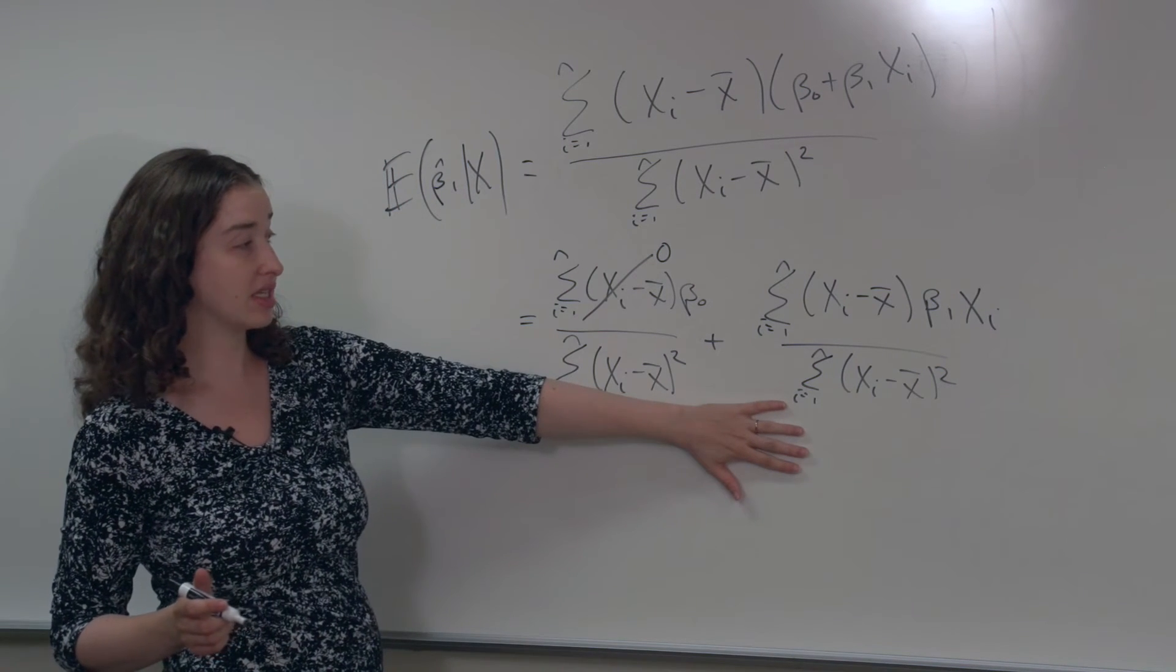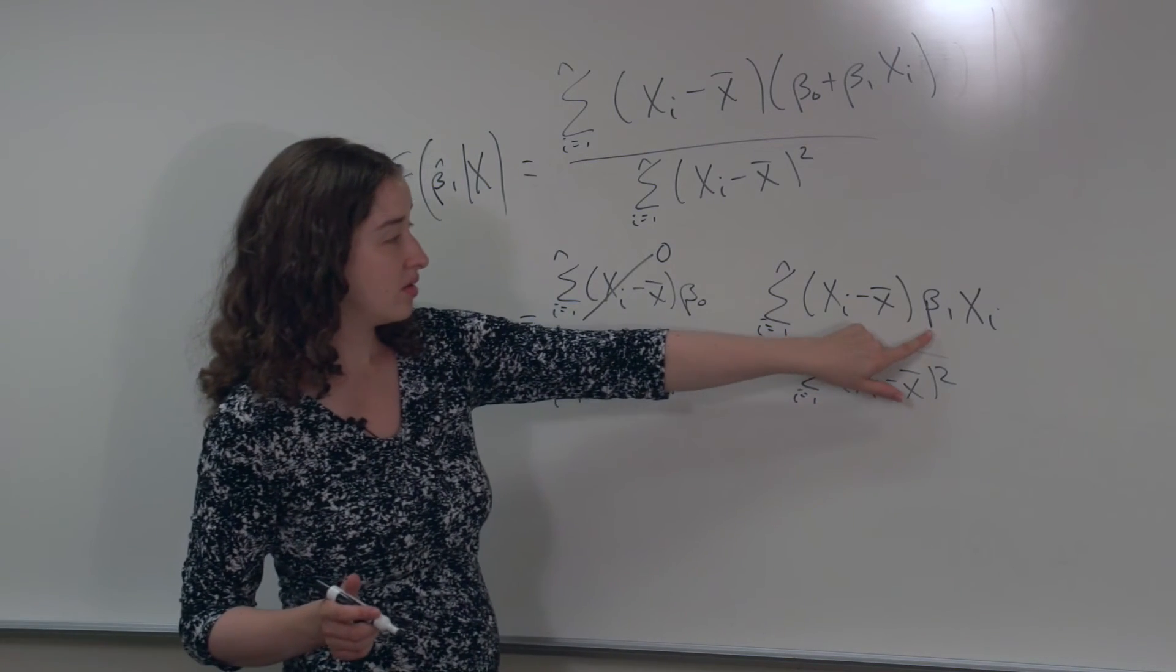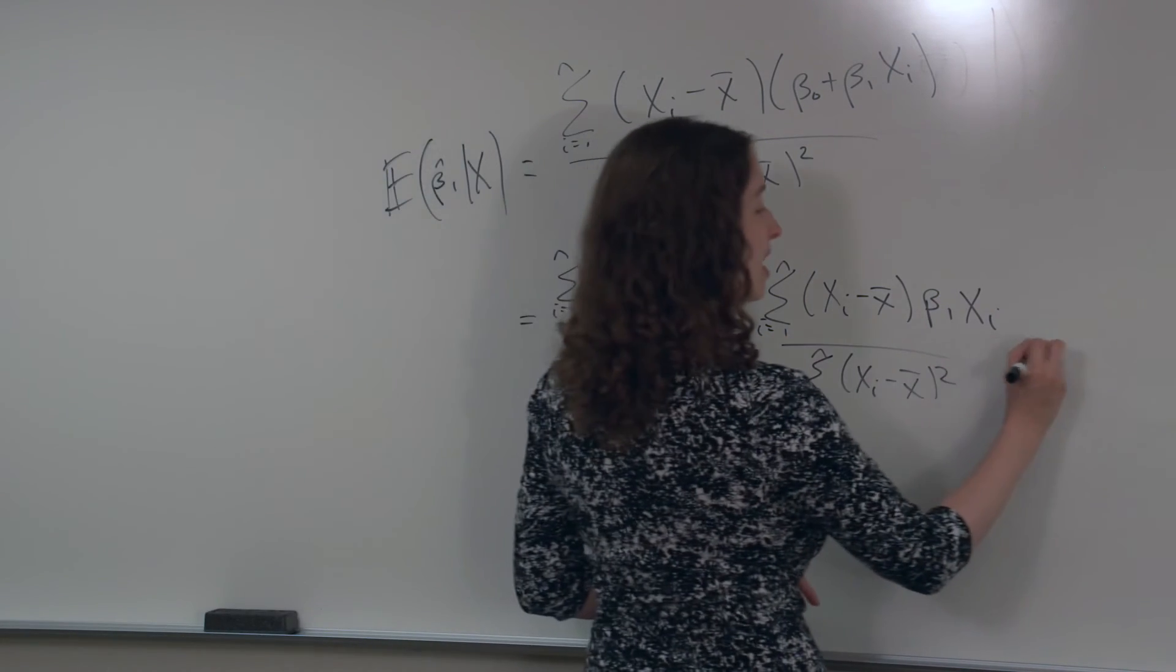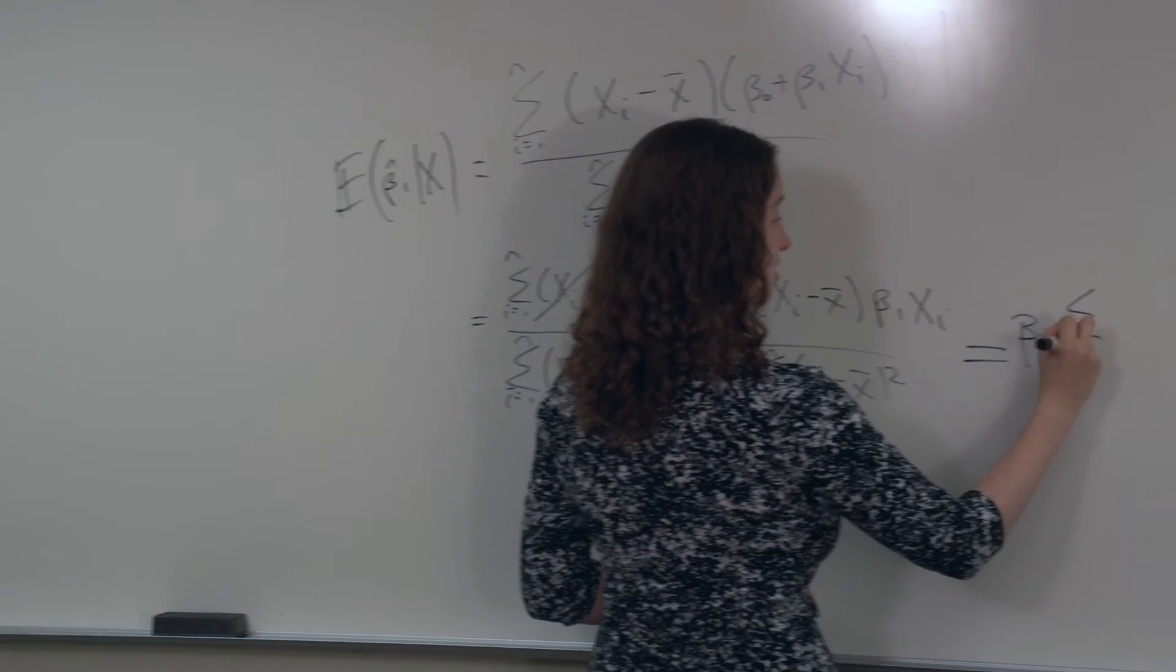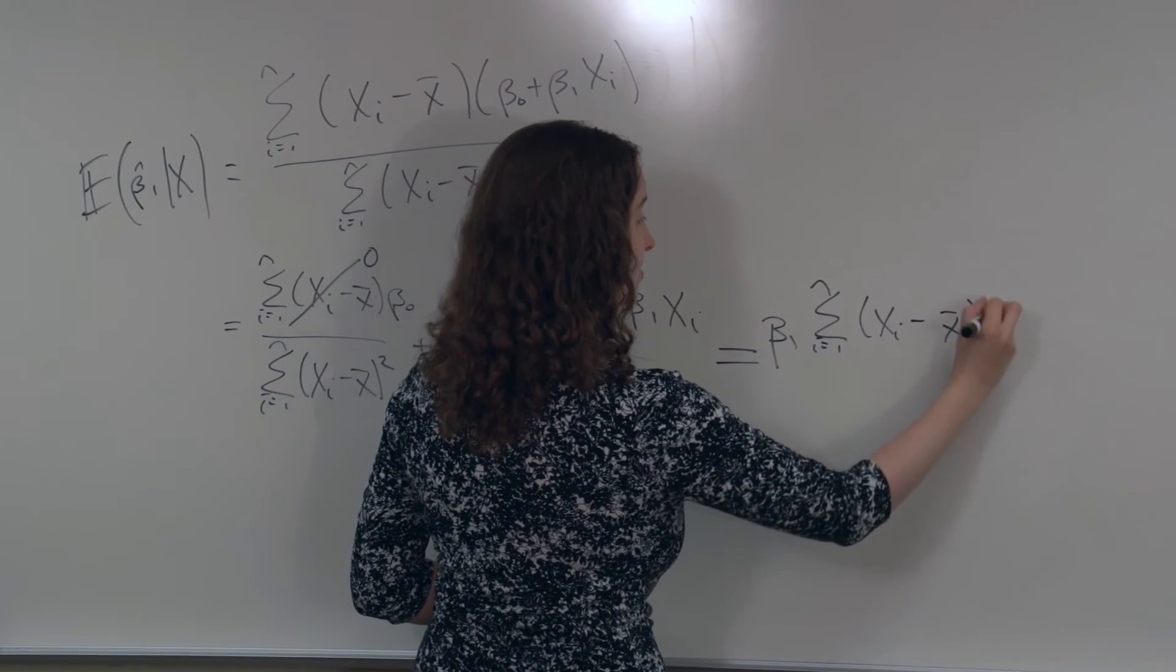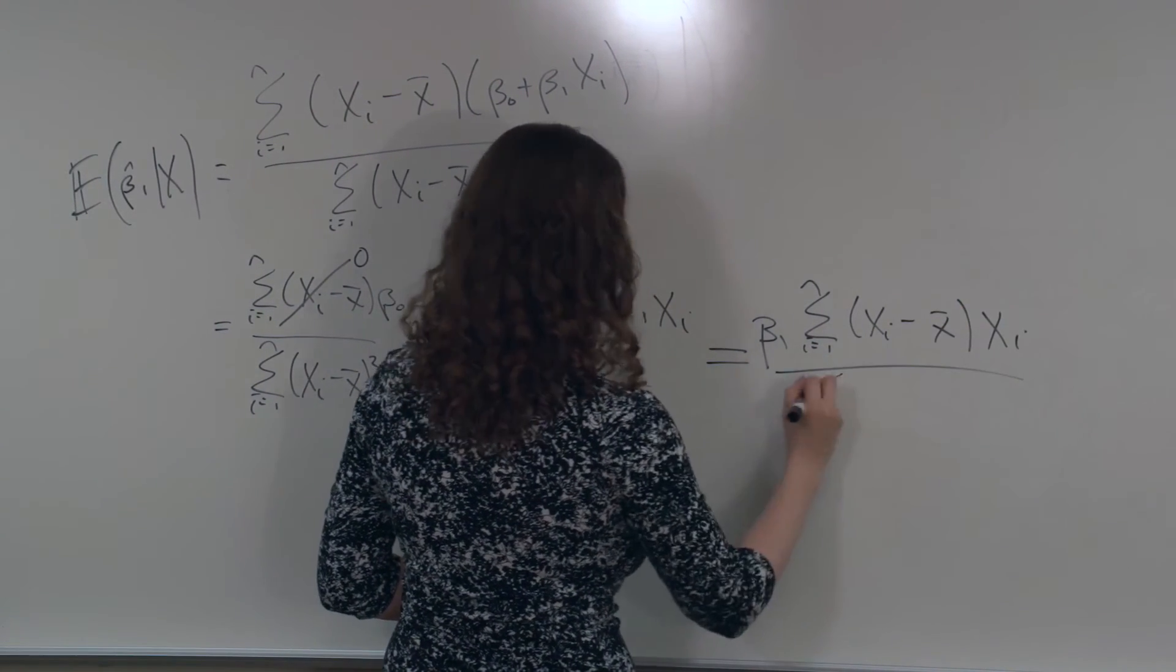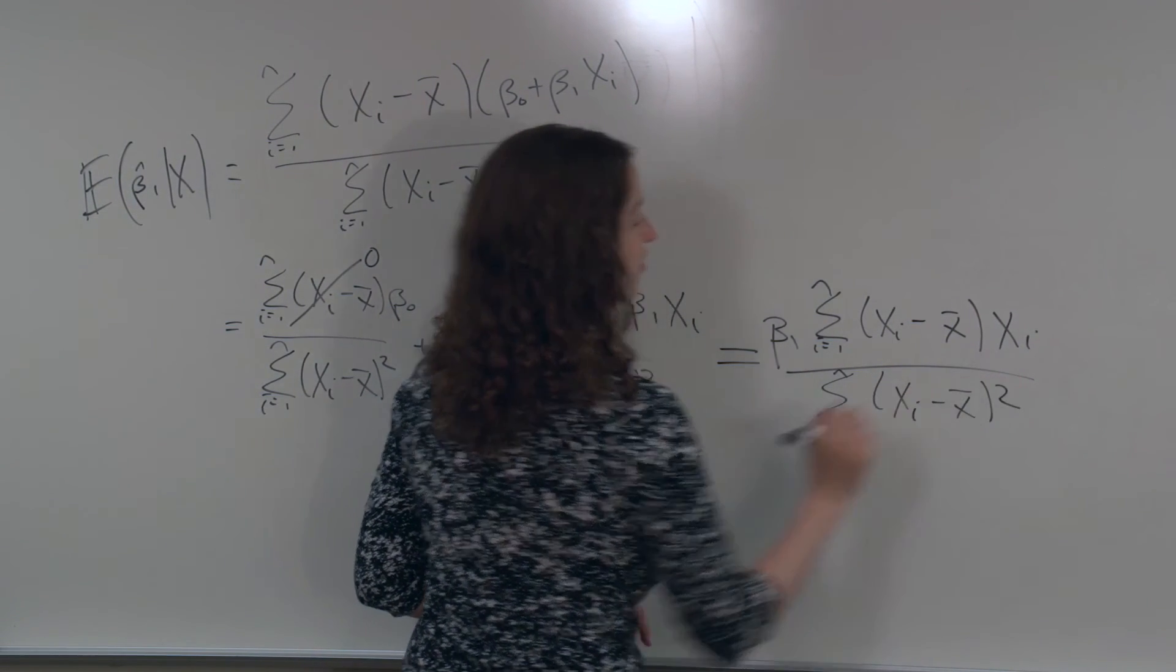So now we get to focus on the second term. This beta 1 here is going to come out because it's just some number, so we're going to factor it out. We've got beta 1 times the sum of xi minus x-bar times xi divided by the sum of xi minus x-bar squared.